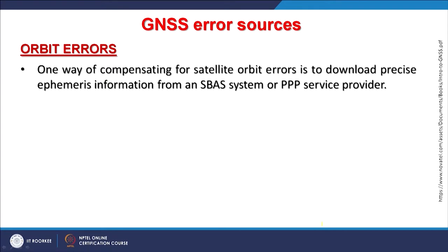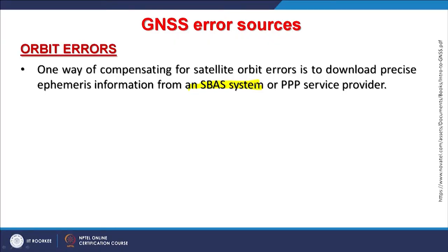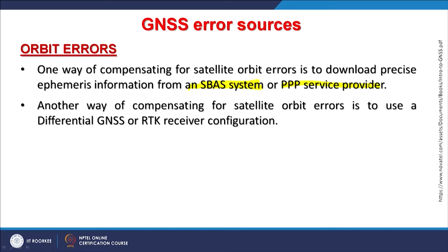One way of compensating for satellite orbit errors is to download precise ephemeris information from an SBAS system, which can solve a lot of problems including clock errors and orbit errors. Another way is to use differential GNSS or RTK receiver configurations, the same approach as used for clock errors.